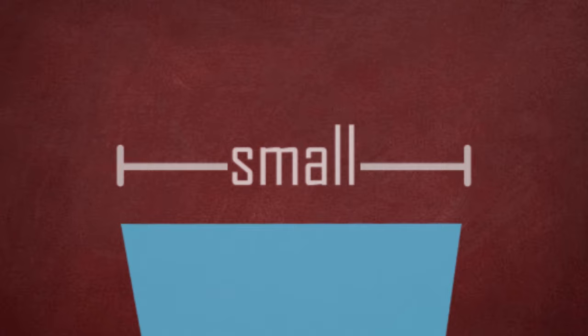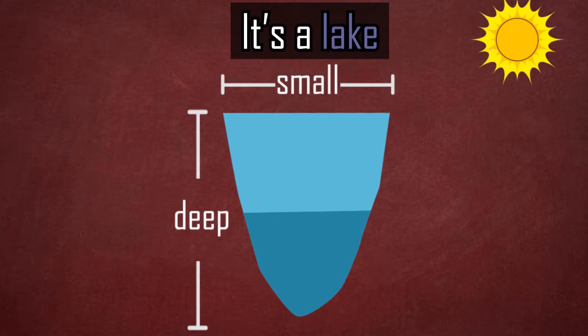A body of water may be small in size, but very deep. Is it a pond or a lake? It's still a lake, because it's deep enough where the sunlight wouldn't reach the bottom.